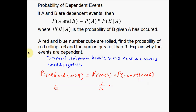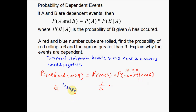So I've already rolled a red six. Now for the blue cube, I can roll a one, two, three, four, five, or six. We want a sum greater than nine, which would be ten, eleven, or twelve. Looking at my choices, I can roll a six and a four, a six and a five, or a six and a six. Any one of those combinations gives me a sum greater than nine, given that I already rolled a red six.